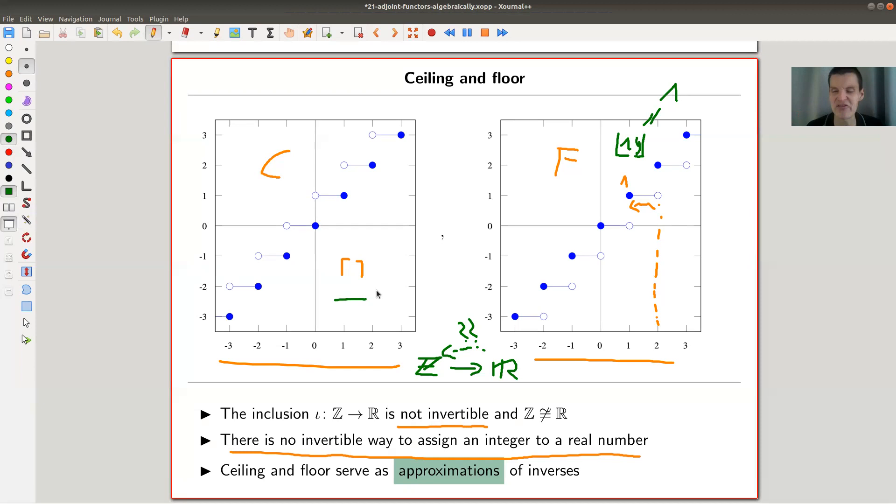Yeah. So in this kind of approximation of inverses, that's what I would like to call them, at least today as they are no inverses that they approximately do what you want them to do. Approximately pi is three or four, depending whether you see the floor.